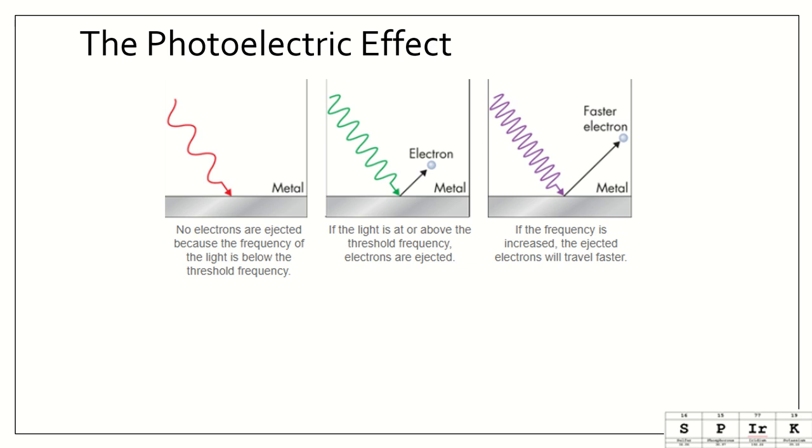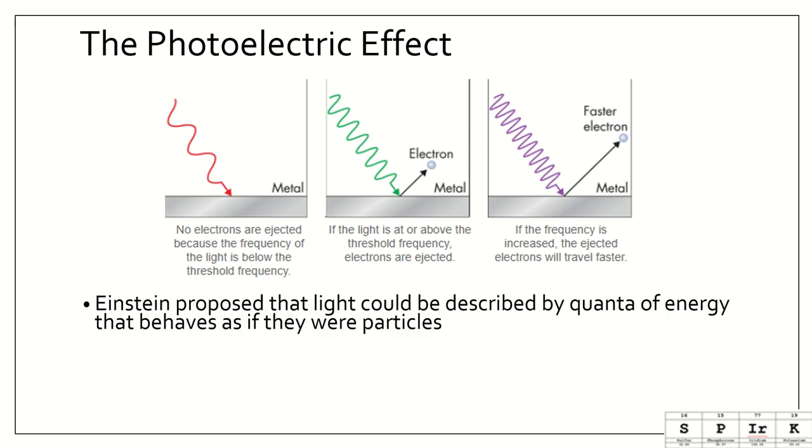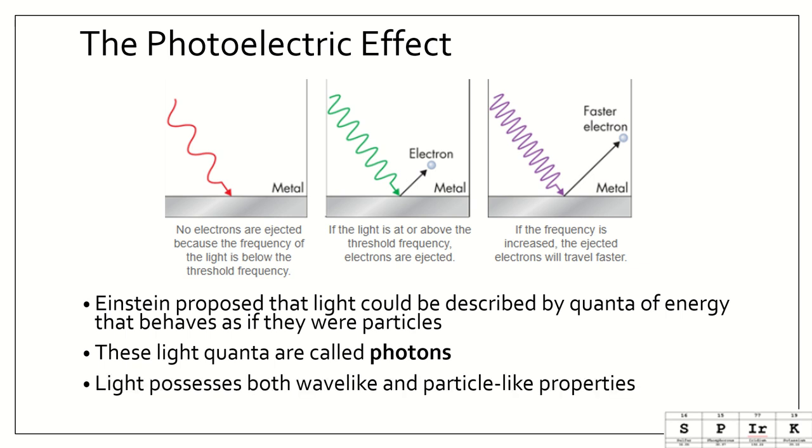We see those electrons jumping, and then we see it as light, which is the light coming back down to the ground state, or the electron coming back to the ground state. Einstein proposed that light could be described by quanta of energy that behaves as if they were particles. So, it's these pieces of light that are causing things to happen. And he called these light quanta photons. Like I said before, he said that light possesses both wave-like and particle-like properties. You may have heard about wave-particle duality. And that's what this is.